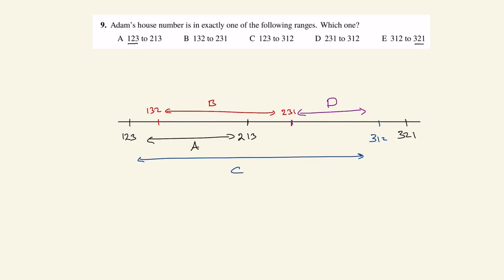So what we're left with is E to be from 312 to 321. This tiny sliver at the end.